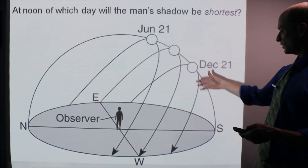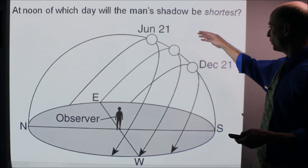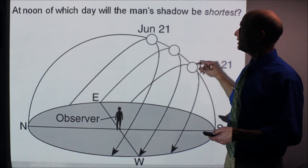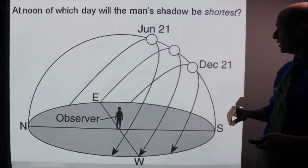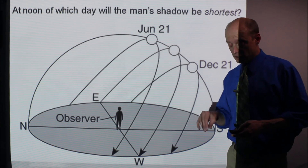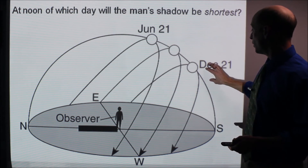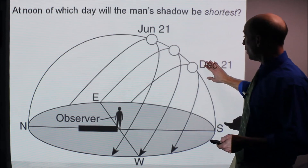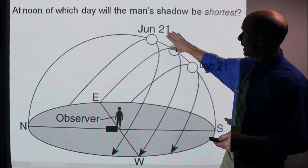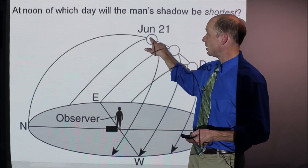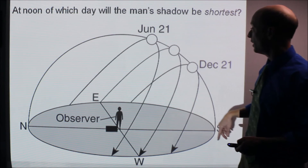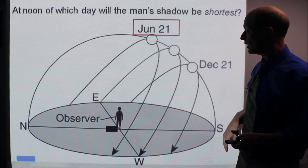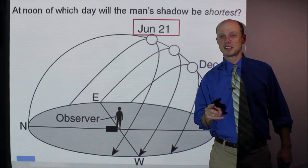Here's another one. We have two days labeled June 21st and December 21st. At noon, on which of these two days will the man's shadow be the shortest? On December 21st the shadow would be longer because the Sun is lower in the sky. On June 21st it would be shorter because the Sun is higher in the sky at solar noon. Therefore he will have the shortest shadow on June 21st. This stuff's important — make sure you know it.